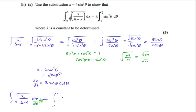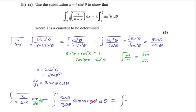The integrand is sinθ/cosθ, and dx/dθ is 8sinθcosθ. Multiplying these together, the cosθ terms cancel, leaving the integral of 8sin²θ dθ. We can take the 8 outside, giving 8 times the integral of sin²θ dθ.